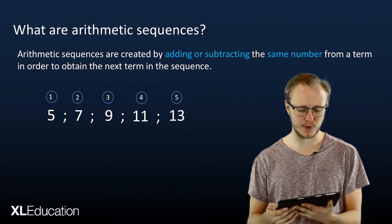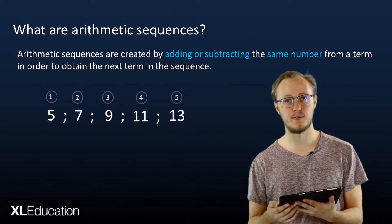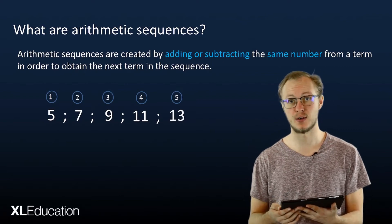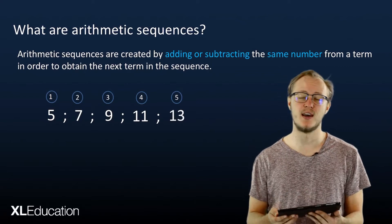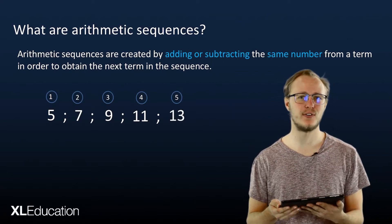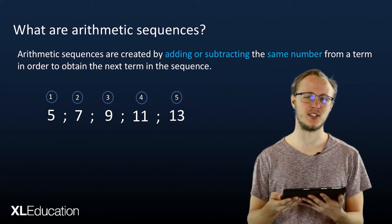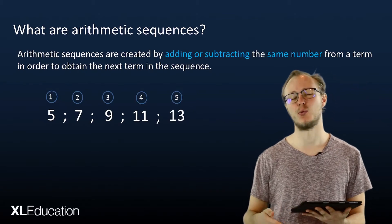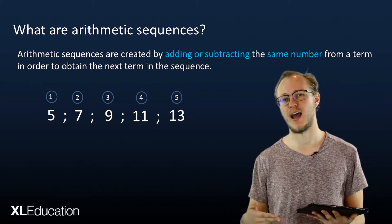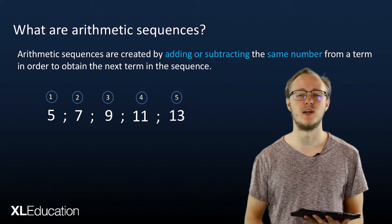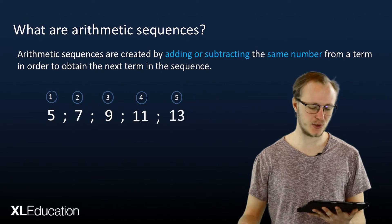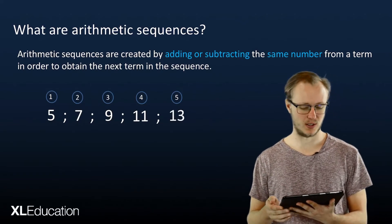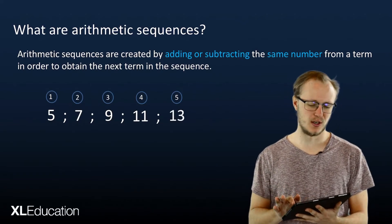So what we've got there — five, seven, nine, eleven, thirteen — that is an arithmetic sequence. We started with a number and we added another number consecutively in order to get each next term in the sequence.